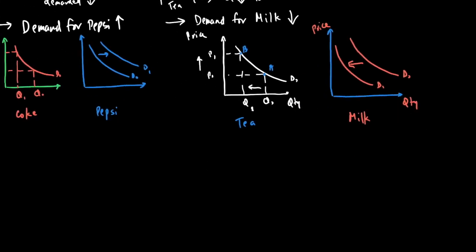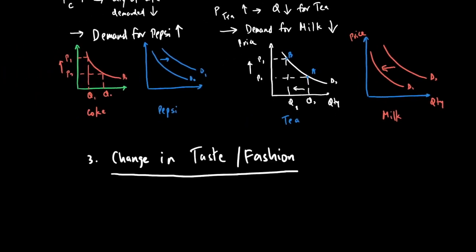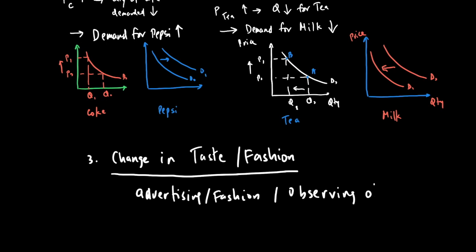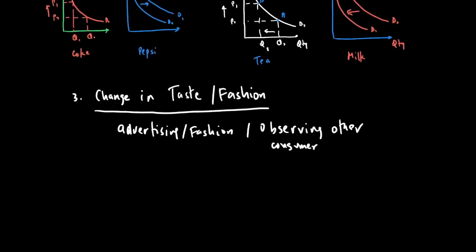The next factor is change in taste or fashion. The more desirable people find a good, the more they will demand it. For example, if people start to like wearing skinny jeans, demand for skinny jeans goes up. Taste can be affected by advertising, fashion, and observing other consumers — if you see a friend wearing something you like, you may demand more of it. Companies spend a lot on marketing to build brand loyalty, which raises demand and creates long-lasting consumers.